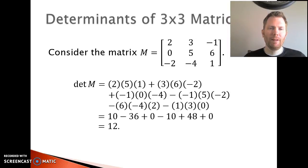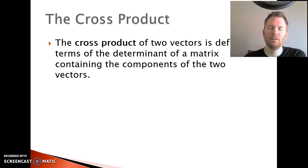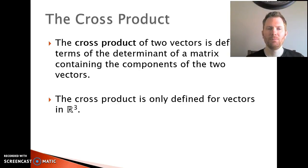So that's how to find the basic determinant of a three by three matrix, but why do we care, what are they used for? Well, we use them to help calculate the cross product. The cross product of two vectors is defined in terms of the determinant of a matrix containing the components of the two vectors.